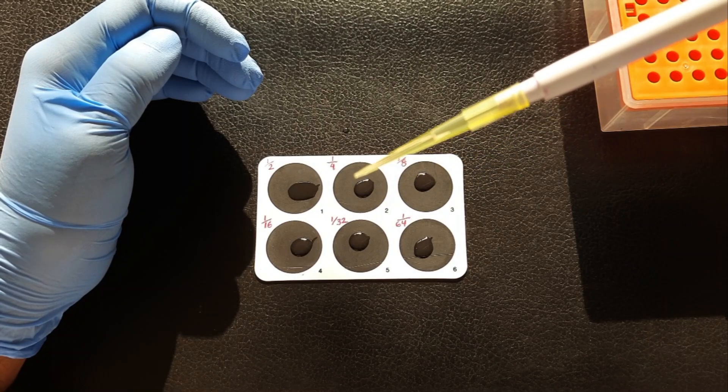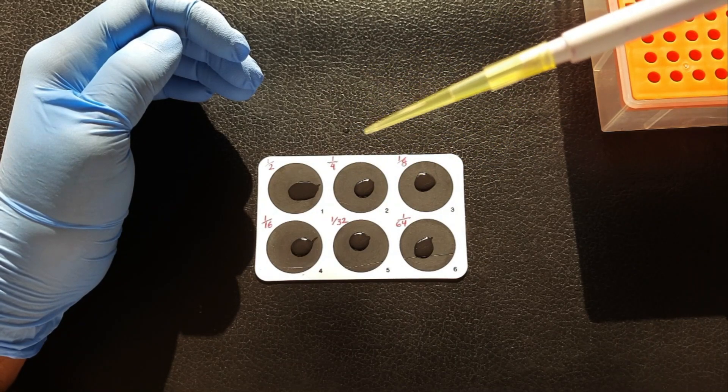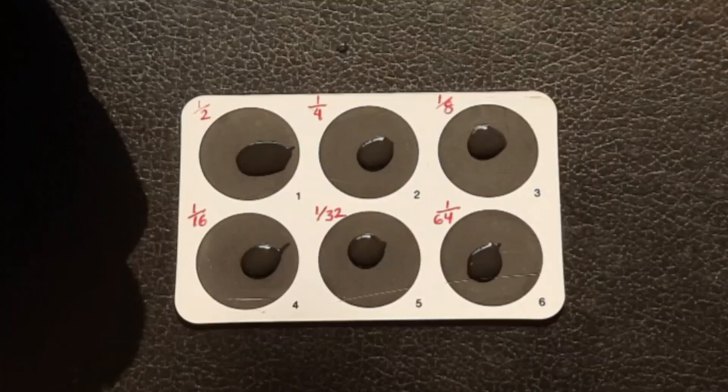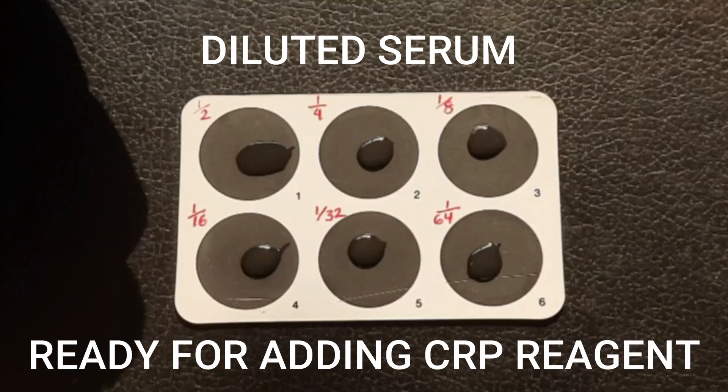Now, discard the last 50 microliter from the circle 6, done. We got our serum sample diluted serially, and it's ready now for adding CRP latex reagent.